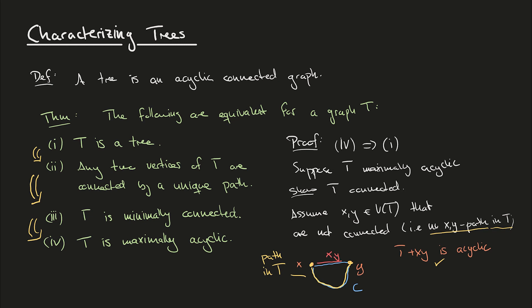But this claim — that T plus xy is acyclic — is itself a contradiction, because we assumed T was maximally acyclic, meaning if we add any edge we get a graph that is no longer acyclic. Here we found that adding the edge xy still gives an acyclic graph, which contradicts maximal acyclicity. The problematic assumption was that we have two vertices in T that are not connected. So this contradiction shows that T is connected.